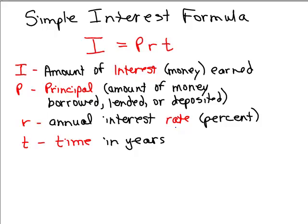R is the annual percentage rate, usually called the rate. When you go to the bank, you ask what are the rates? So instead of writing P for percent, we use R for rate, but it's usually given in percent form. And T is the time in years — this allows us to figure out how much interest you earn not only at the end of a year, but for other time periods as well.